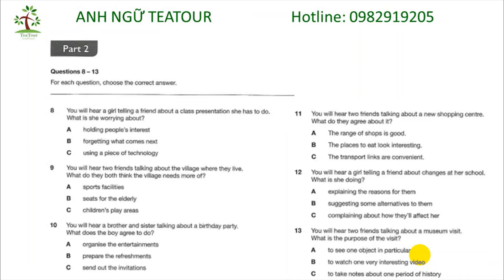Question 9: You will hear two friends talking about the village where they live. What do they both think the village needs more of? Apparently, the local council's got some money to spend on our village. What do you think they should spend it on? Well, we always used to say things for young people. But since the gym and football training ground opened, we've been okay. I agree. Maybe it's time they spend something on the old folks — somewhere for them to rest when they're out for a walk. You're right. There isn't anywhere, really. They could put something next to the kids' climbing frame. That's a really good place for one. Let's suggest it.